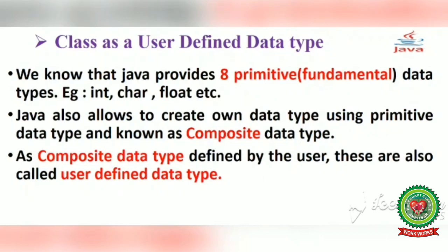Java also allows us to create our own data type using primitive types, known as composite data type — meaning we give our own name to the data type, but that data type is built with the help of basic data types. Since composite data types are defined by the user, they are also called user defined data types.